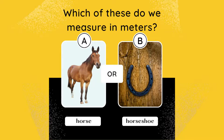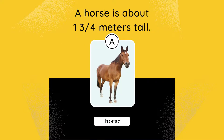Which of these do we measure in meters: A, horse, or B, horseshoe? The answer is A. A horse is about 1 and three-quarters meters tall.